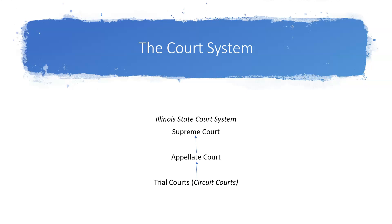At the trial court level, disputes of fact are presented before either the judge or the jury to decide the outcome. Rules of law — which involve legal precedents — are applied to the facts in arriving at an outcome, decision, or verdict.